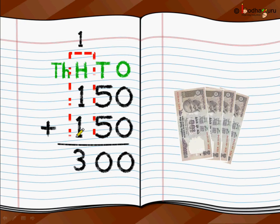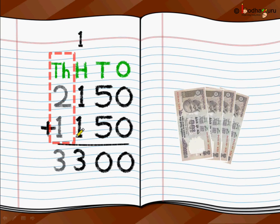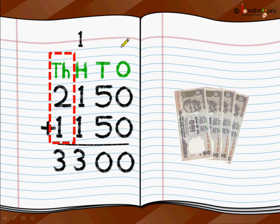1 plus 1 plus 1 is 3. Then we added the 1000's position. Remember, we are doing this big number addition, but if you look at it, we are only doing addition between 2 single digits at a time — starting from place value 1, then going to 10, then 100, then 1000. So Mohan has saved 3300 rupees.